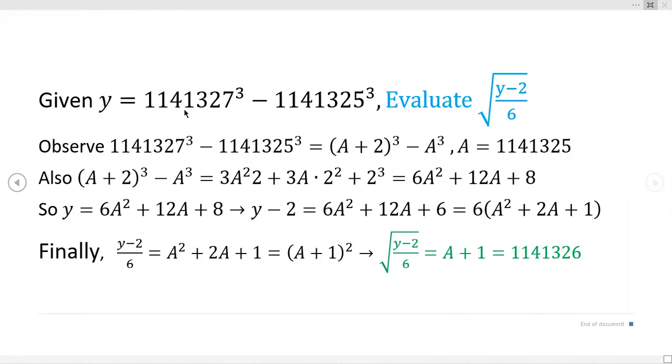This is 1,141,327 cubed. The key factor that just screams for a substitution is notice that this number right here without the cube is just two less. 1,141,325 is two less than this number right here not counting the cube. We're asked to evaluate, that means we're supposed to find a numerical expression for the quantity of the square root of y minus 2 over 6.